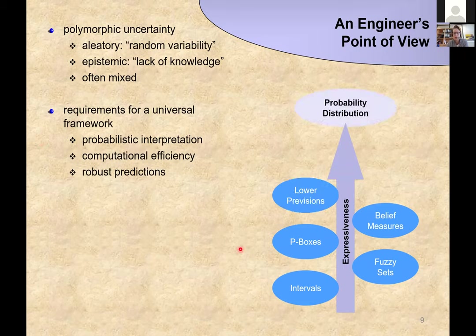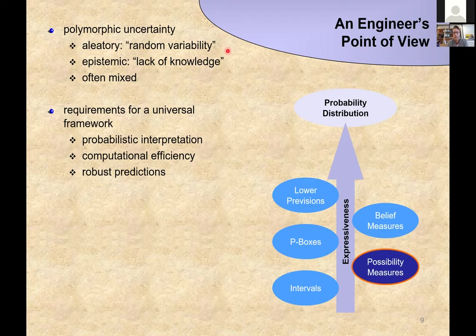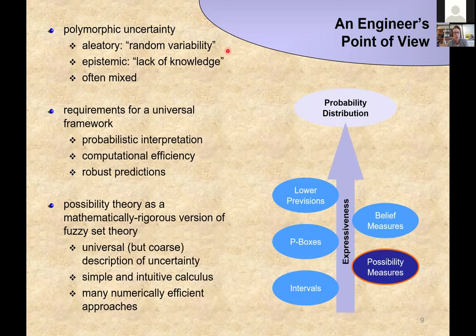There are many frameworks that achieve this: intervals, fuzzy sets, P-boxes, belief measures, lower previsions, and many more. In terms of expressiveness, they can more or less be ordered, with probability theory being the most expressive because you only have aleatory uncertainty. I'm arguing that if we replace fuzzy sets with possibility measures, we obtain a mathematically rigorous version of fuzzy set theory that provides a universal framework for quantifying both types of uncertainty, with a simple and intuitive calculus and numerically efficient approaches.